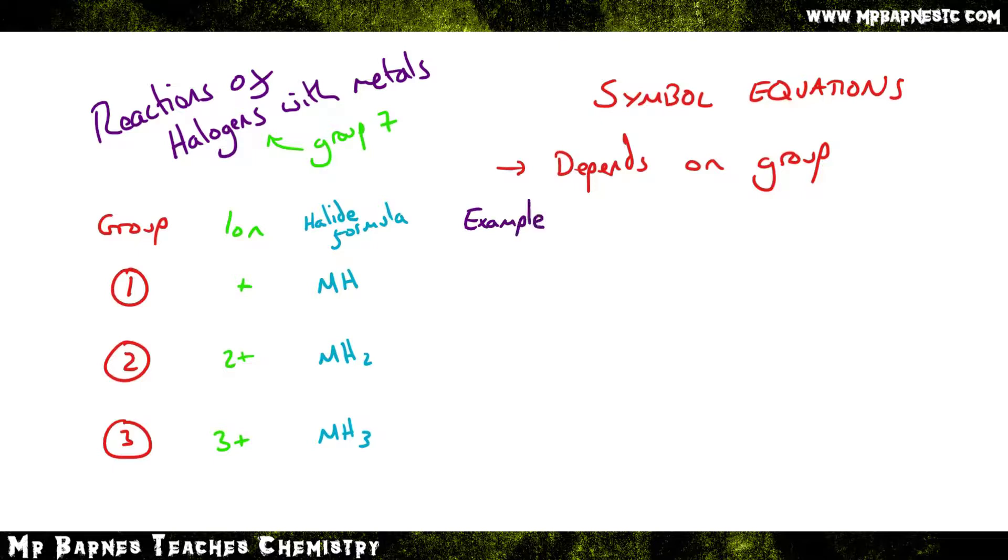If you look at some examples, let's start off with group 1. We're going to react potassium, which is K, with chlorine. Remember, they're diatomic, so Cl2. And it's going to make potassium chloride. We know the formula is 1 metal and 1 halide, therefore it's going to be KCl.